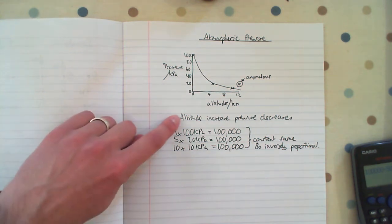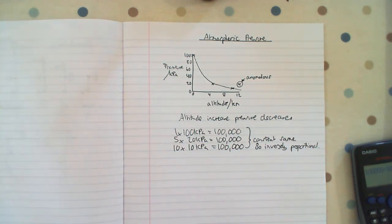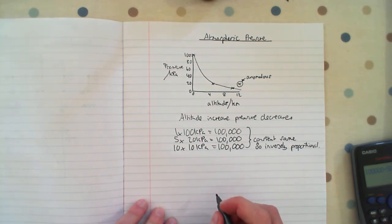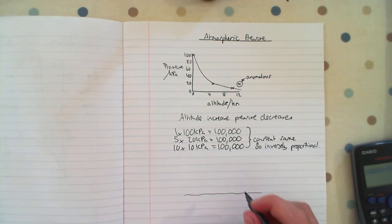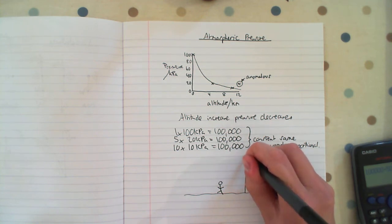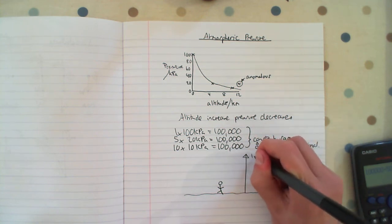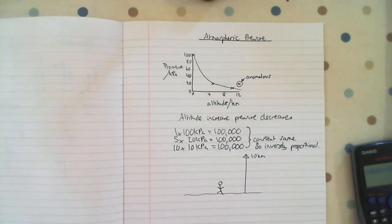So going back to this key statement of altitude increasing, pressure decreasing, why is that? So let's look at the Earth's surface at sea. Let's imagine a person standing at sea level. And let's say that is 10 kilometers of altitude. Obviously this person has been drawn absolutely massively.